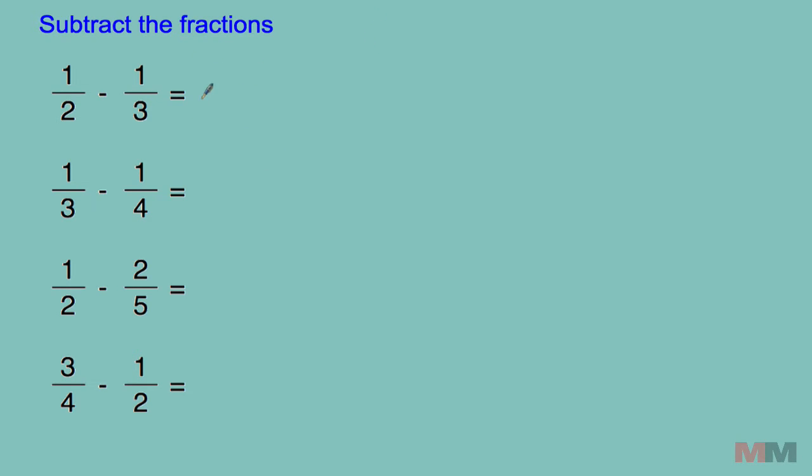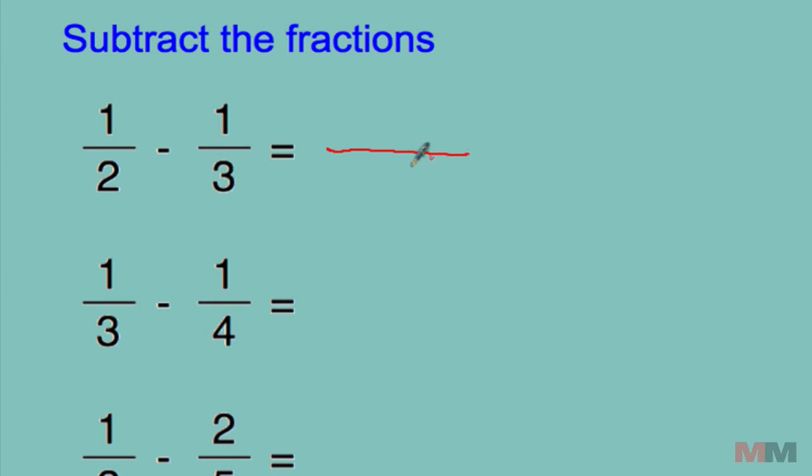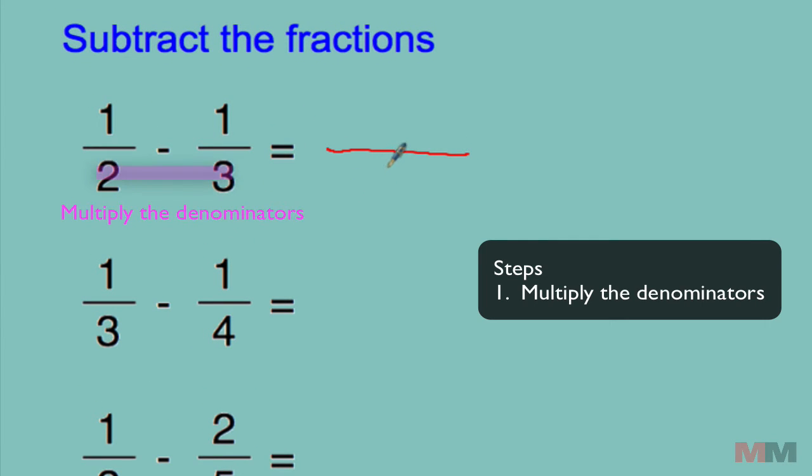First step: multiply the denominators. Two times three, pretty easy, I'll put that as six.